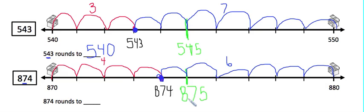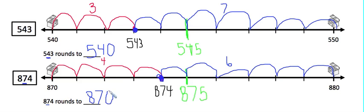So because 874 is closest to 870, that means that 874 rounded to the nearest ten is 870. All right, boys and girls, you now are experts at rounding three-digit numbers to the nearest ten using a number line. Thanks for watching.